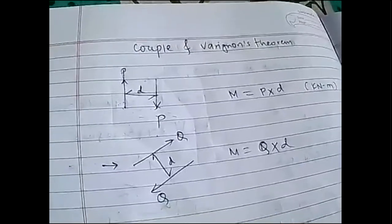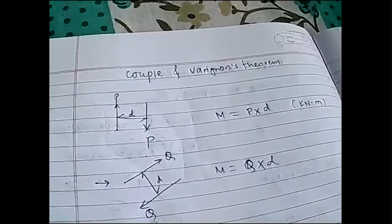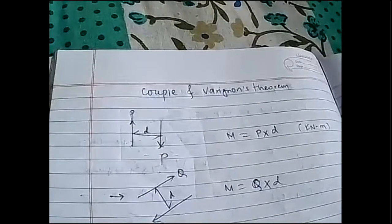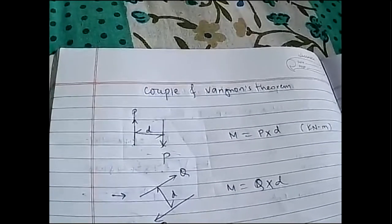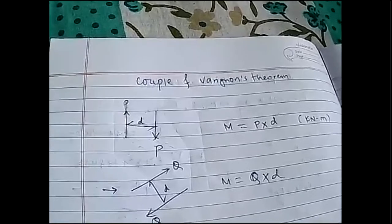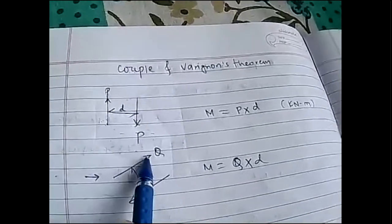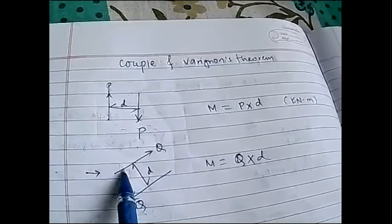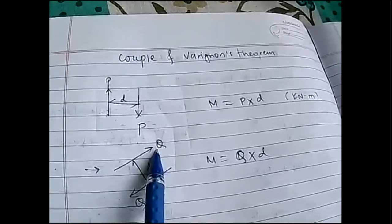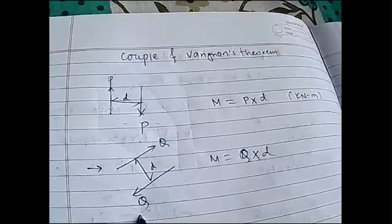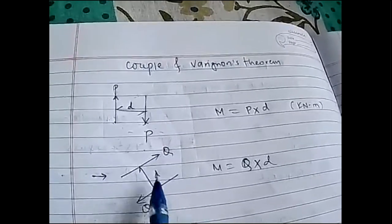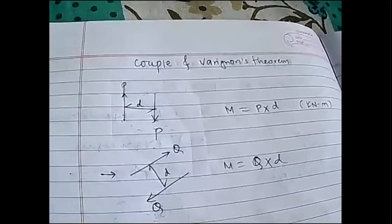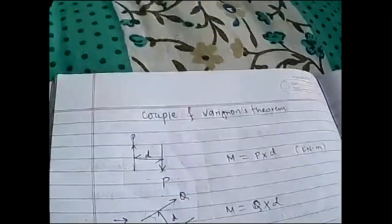Two unlike parallel non-collinear forces of the same magnitude form a couple. Unlike means their direction is not the same — they are exactly opposite to each other — but their magnitude is the same. And they have some specific distance between them, meaning they are parallel to each other. Then they form a couple.